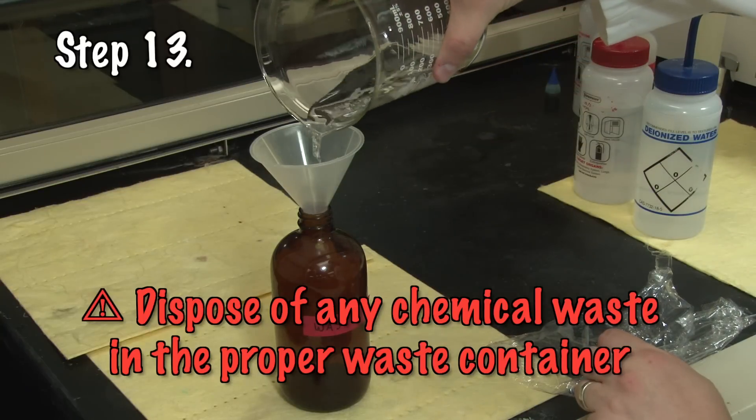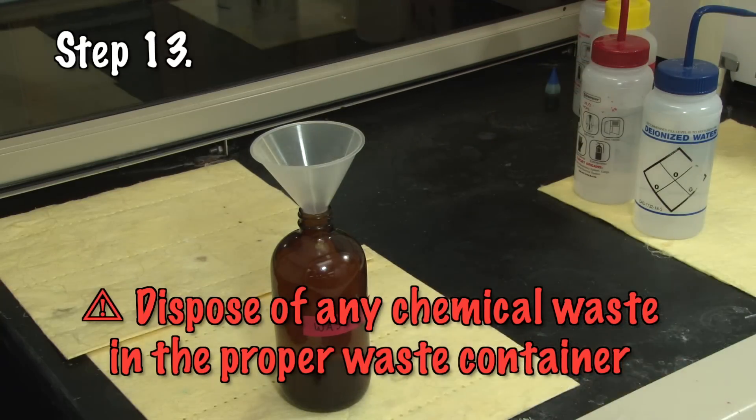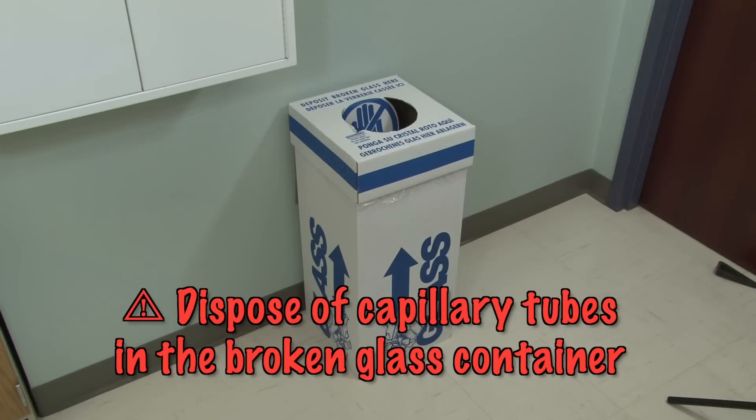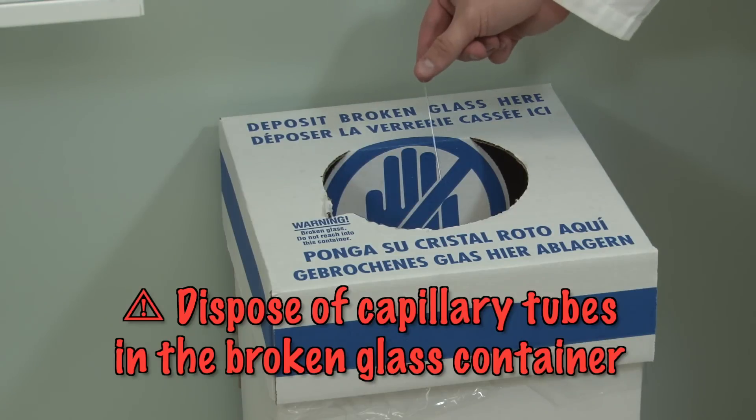Once all the groups are finished with the known chemicals, you can dispose of all your chemicals into a waste container. Capillary tubes need to go into the designated broken glass container.